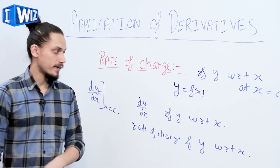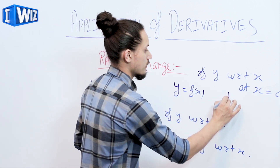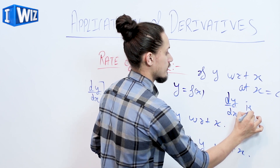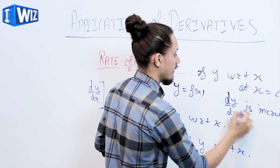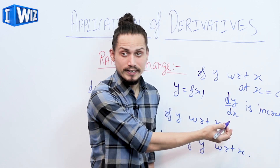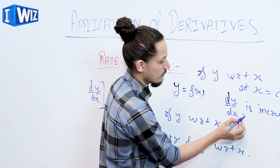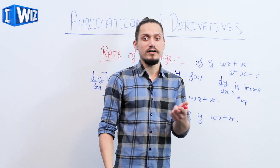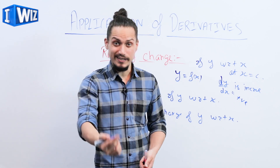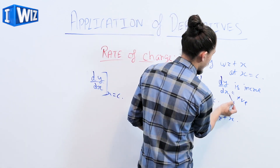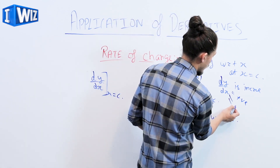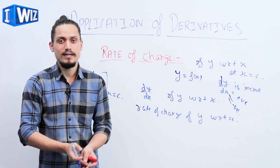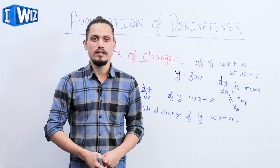Another important point: if I'm given that the rate of change, that is dy/dx, is increasing, it implies the value of dy/dx will be positive. And if I'm given that the rate of change is decreasing, it implies the value of dy/dx will be negative. So we are clear on the basic points. Let's look into some examples.